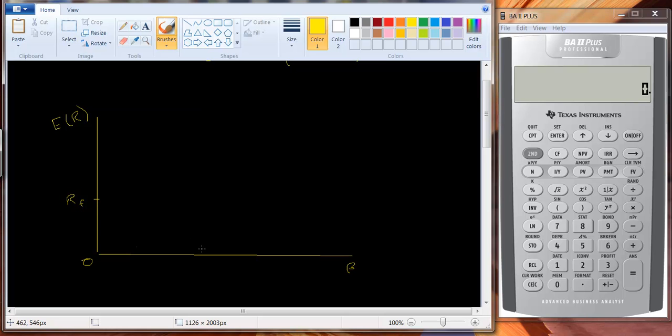Another point we can have would be where the beta for the market is. We know what the beta for the market is, it's going to be one. Beta is normalized so that it is going to be equal to one. A beta less than one means you're less volatile than the market. A beta greater than one will mean that you're more volatile than the market. So what's the return for the market? Up here we would have some expected return for our market. And so now we have two points.